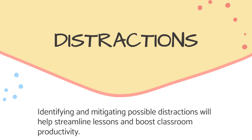Distractions: Identifying and mitigating possible distractions will help streamline lessons and boost classroom productivity. Things like windows facing a playground, nearby busy lobbies and hallways, water fountains, people using the pencil sharpener, etc., can all easily grab the attention of a student — engaged or not. Try to keep these distractions out of your students' line of sight.